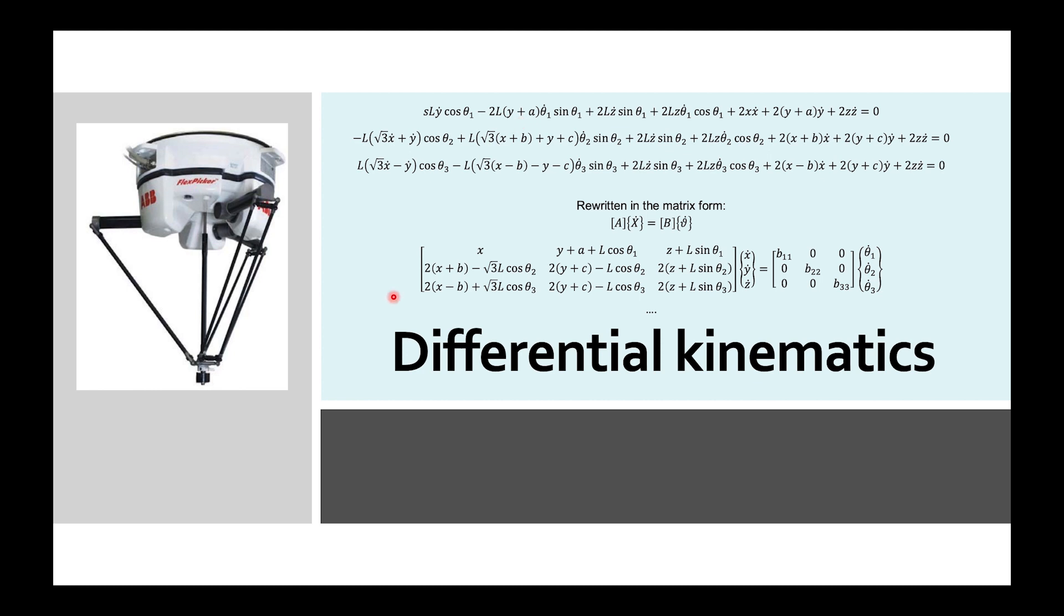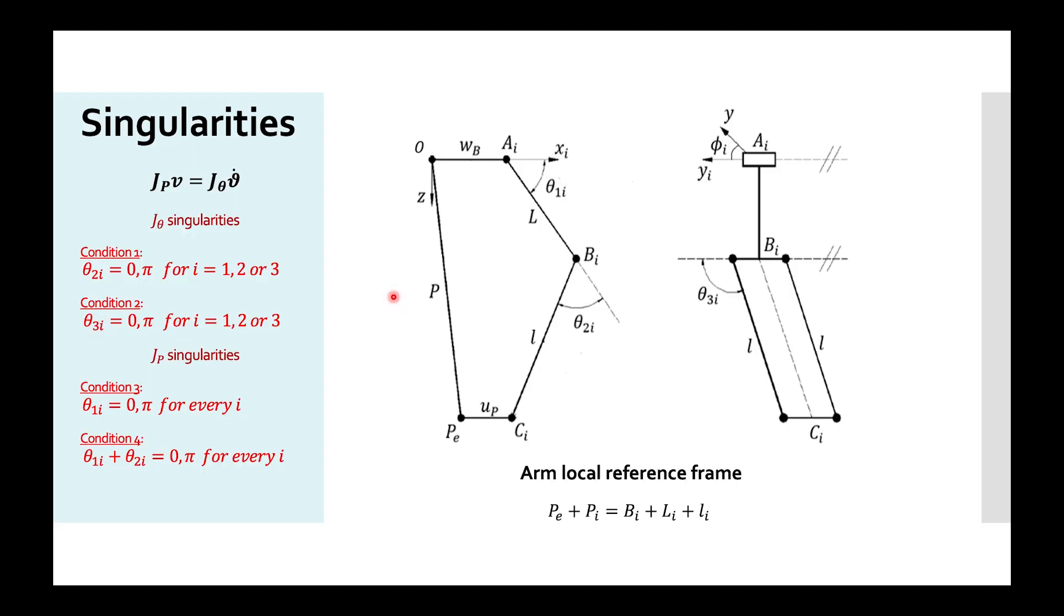Nevertheless, these are very complex to derive any conclusion on where singularities may arise. Therefore, the differential kinematics can be also studied by analyzing the system with these different frames. In this case, O represents the center of the fixed base. Capital L is the upper link, lower case L is the lower link, and these are the joint variables theta 1i, theta 2i and theta 3i. In order to arrive to the Jacobian matrix, this loop equation is analyzed and after mathematical calculations, we arrive to this equation and then to the Jacobian matrices.